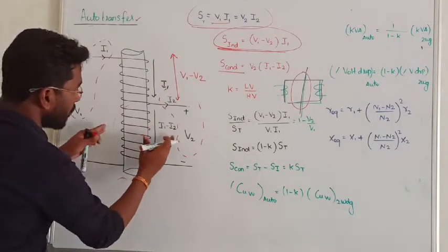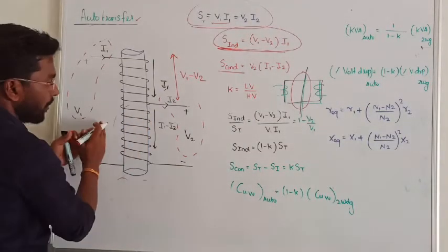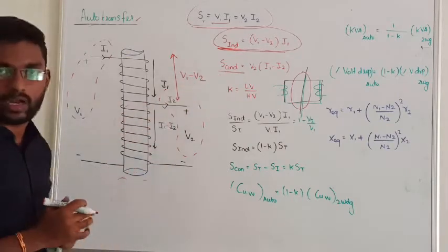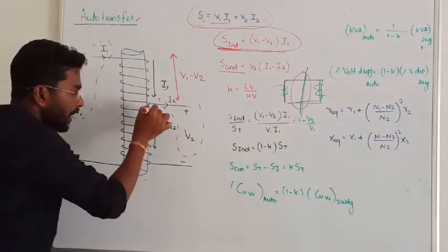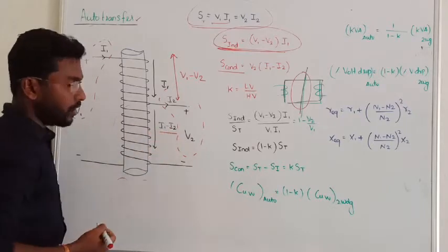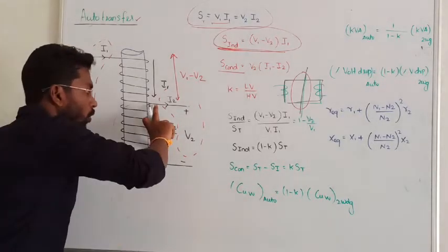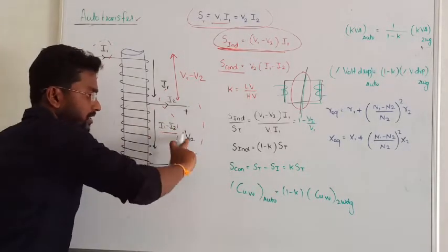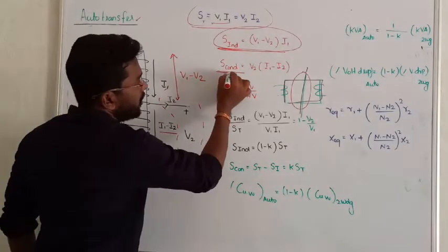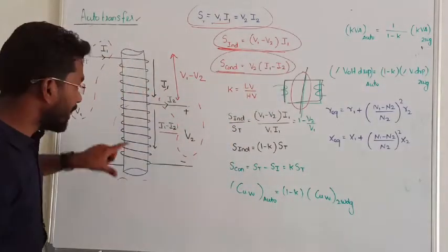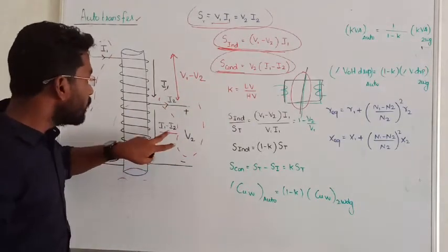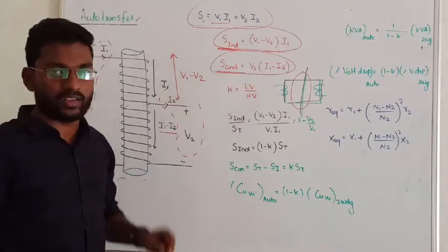There are two zones of power transfer: the primary zone and the secondary zone. In the common zone, the current is I1 minus I2 and the voltage is V2. This is the zone where power is transferred conductively. The inductively transferred power can also be expressed as V2 multiplied by (I1 minus I2).